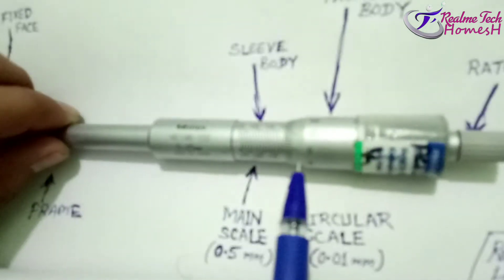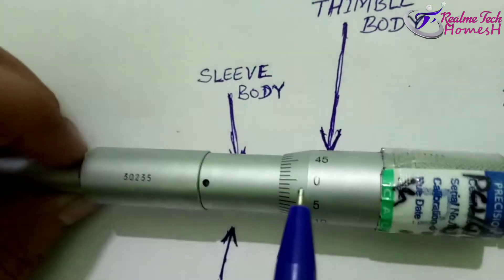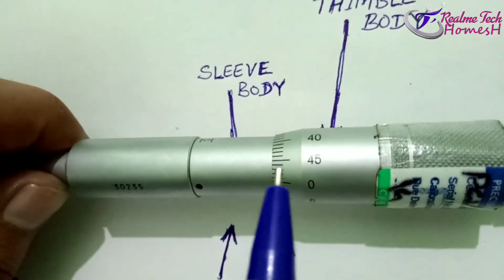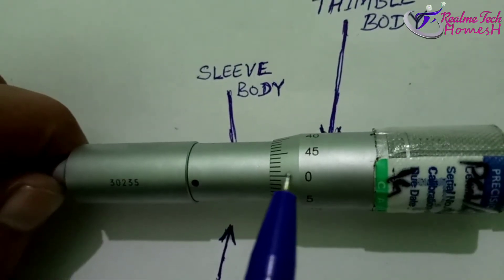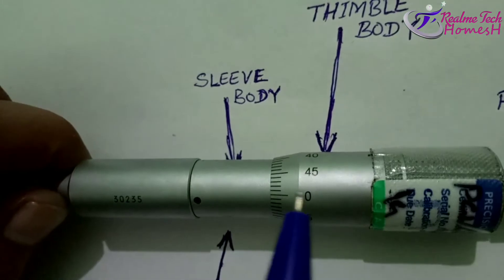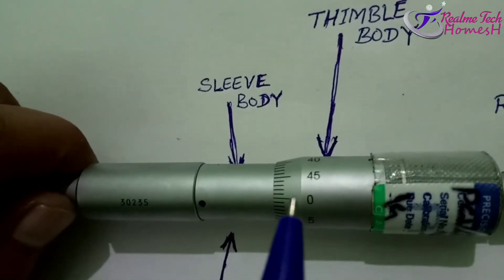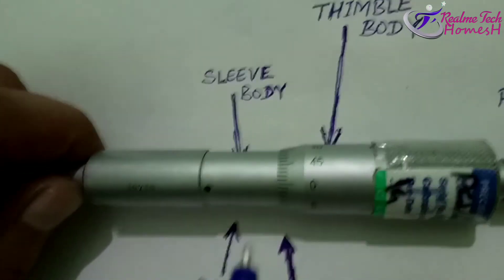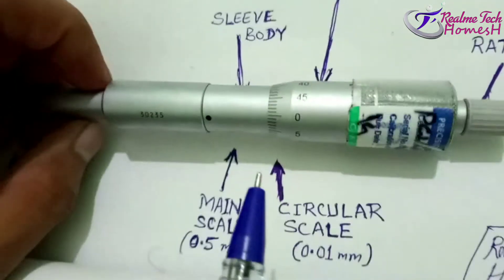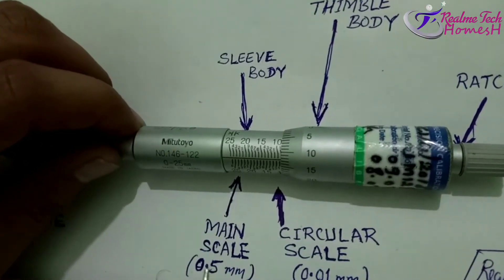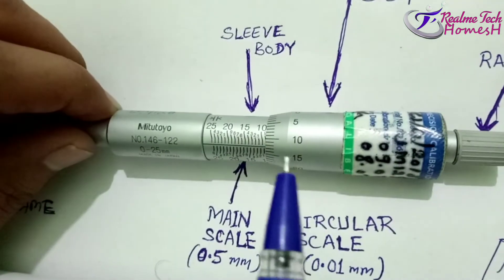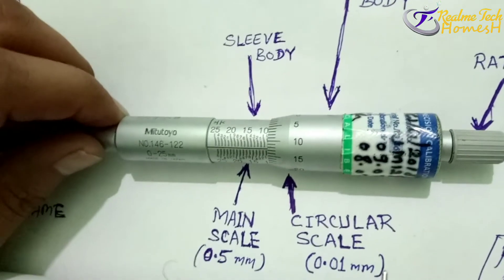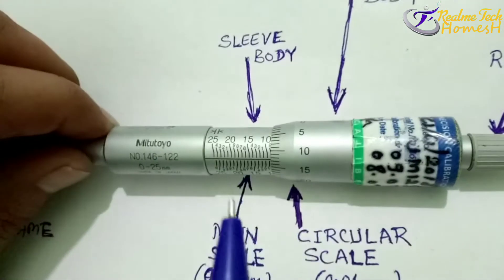The circular scale has 50 divisions — you can see 0, 5, 10, 15, 25, 30, 35, 45, 46, 47, 48, 49, and 50. Each division on this thimble circular scale is 0.01 mm, which is the least count of this micrometer. The main scale has a least count of 0.5 mm, and the circular scale has a least count of 0.01 mm per division.